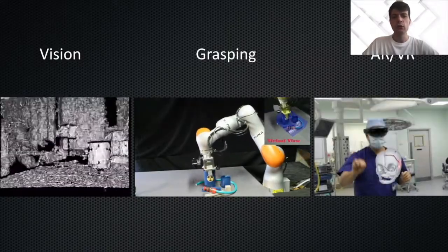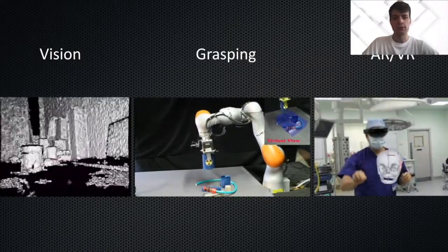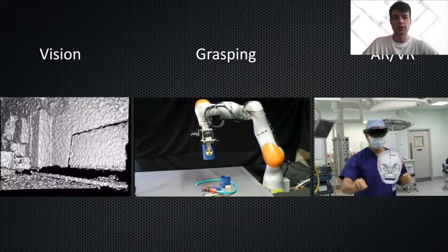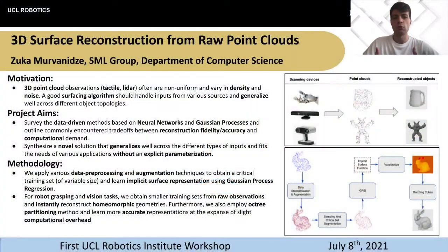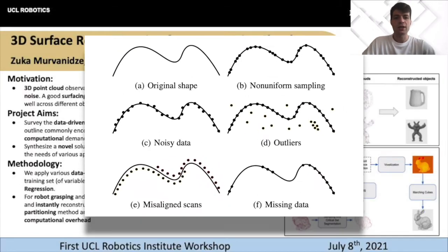Real-world objects can be observed using devices such as laser scanners or robot tactiles and converted into a point cloud representation. Such observations often vary in sampling density, presence of noise, number of outlier points, and so on.